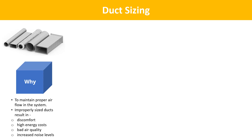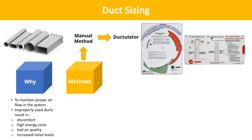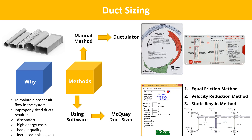The next term is Duct Sizing. Duct systems are designed to properly distribute air throughout a building. Ducts that are not well designed result in discomfort, high energy costs, bad air quality, and increased noise levels. Choosing the right size duct is critical to maintain proper airflow in the system. For manual duct sizing, a ductilator is used — the McKee duct sizer is the most widely used. Methods employed to calculate the right size of duct include the Equal Friction method, Velocity Reduction method, and Static Regain method.